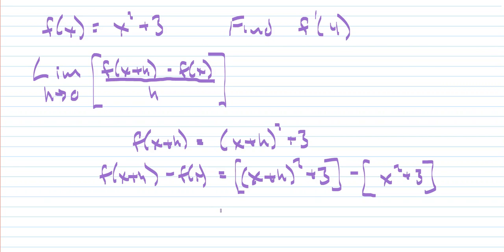And now I'm going to simplify that. So we have to expand this binomial, and I have a quick math video on reviewing how to do that. And then add the 3 and then distribute the negative. And then let's simplify that a little bit more by canceling out these terms that have opposite signs. And so what we're left with is 2xh plus h squared.